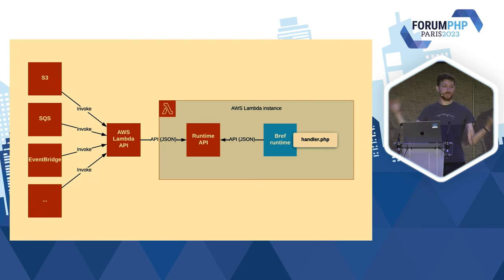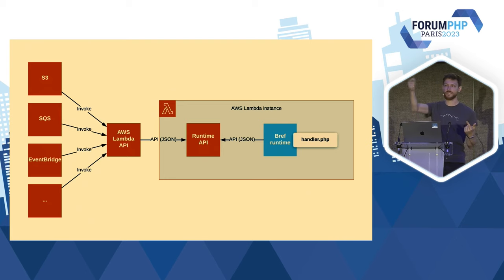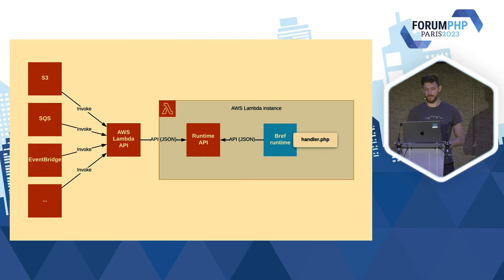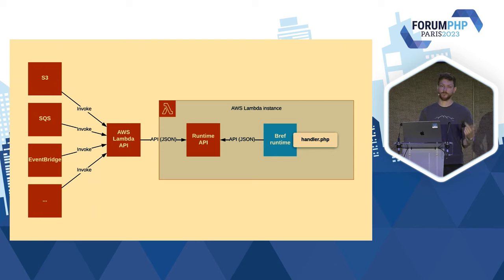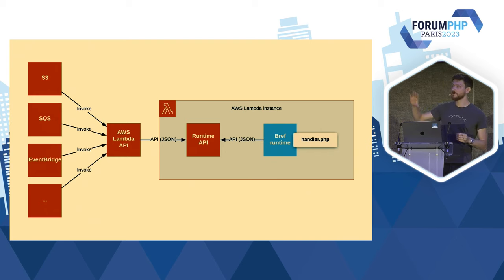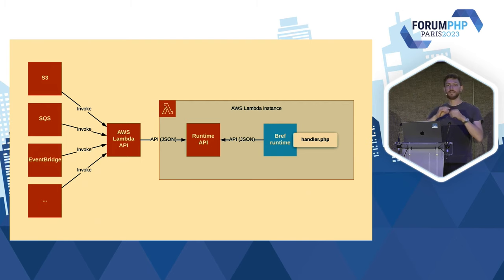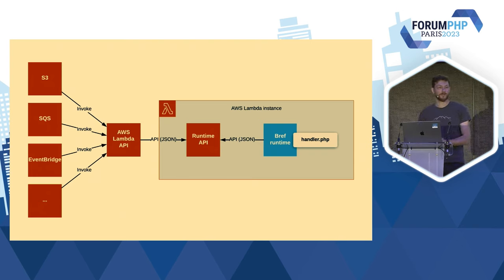C'est très événementiel — la majorité de ce qu'on fait est événementiel quand on s'enlève l'idée du serveur qui tourne. Dans notre code, on reçoit soit les détails du fichier qui a été uploadé, soit les détails du job à traiter. EventBridge, c'est super utile pour la communication asynchrone entre microservices. J'ai un microservice qui fait une tâche et qui va dire : il y a telle chose qui a été traitée, je mets un événement. Les microservices choisissent d'écouter ou pas cet événement et peuvent dire : quand il y a tel événement, exécute tel code. C'est toujours ce même pattern — on vient souscrire à des événements déclenchés par d'autres services AWS.